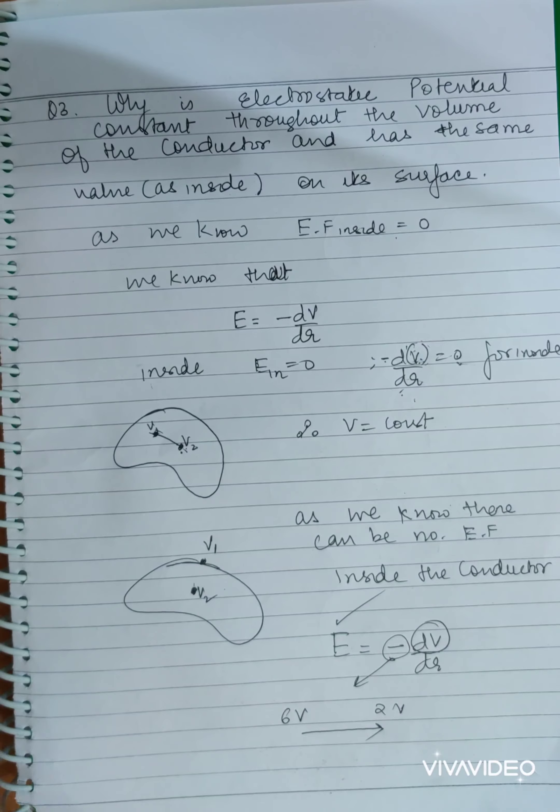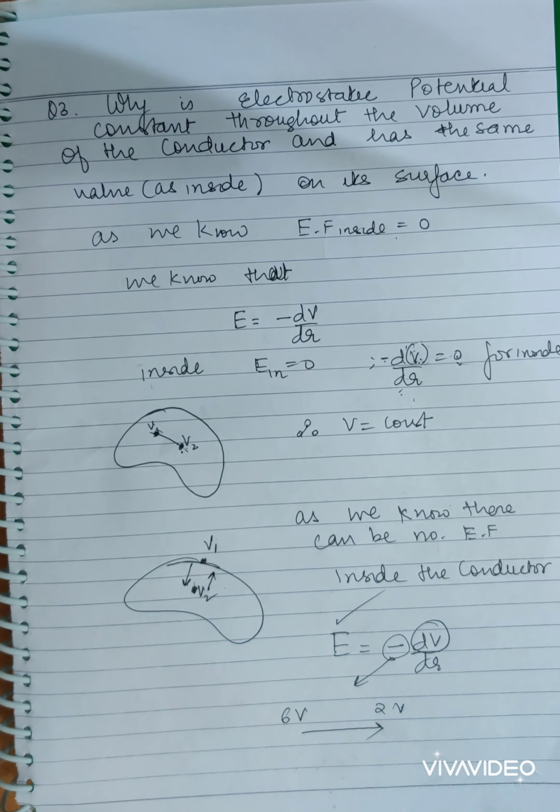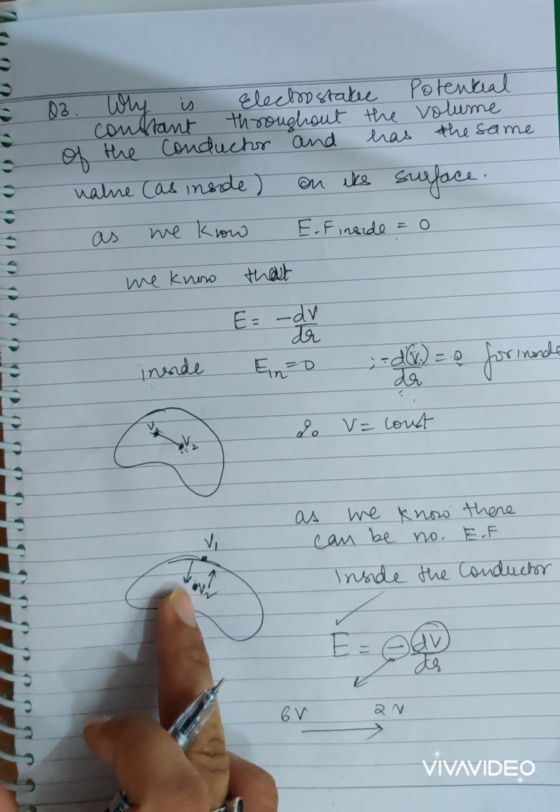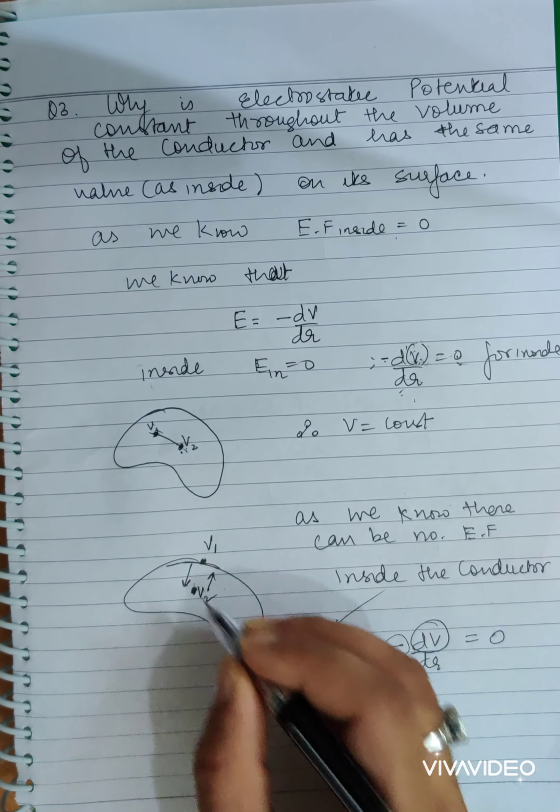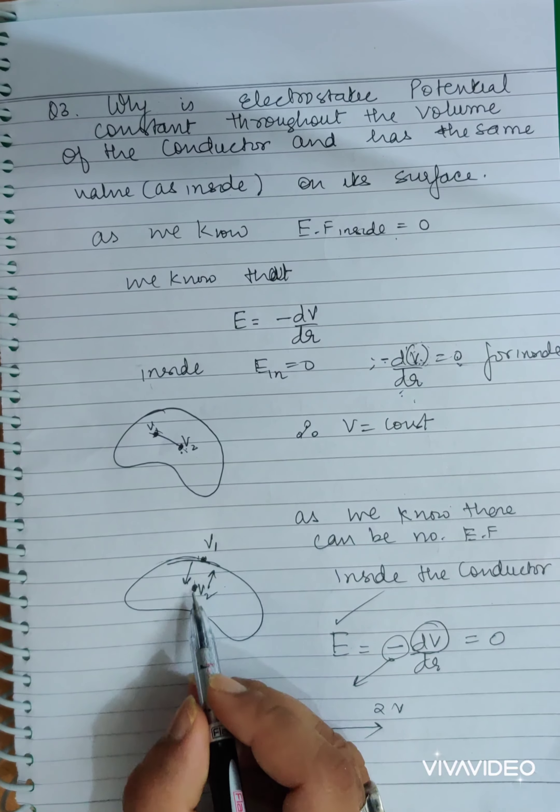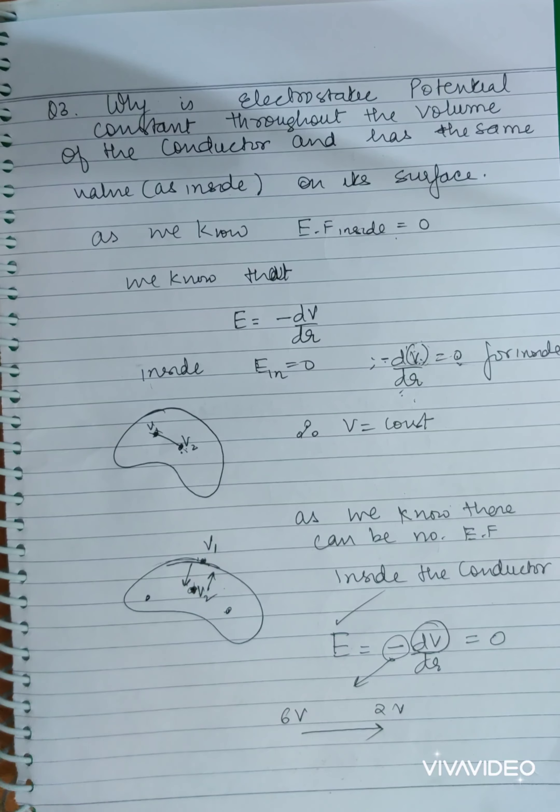Now, because electric field can't happen like this, the potential will be the same. Electric field is zero. Hence, the value inside and on the surface will be the same.